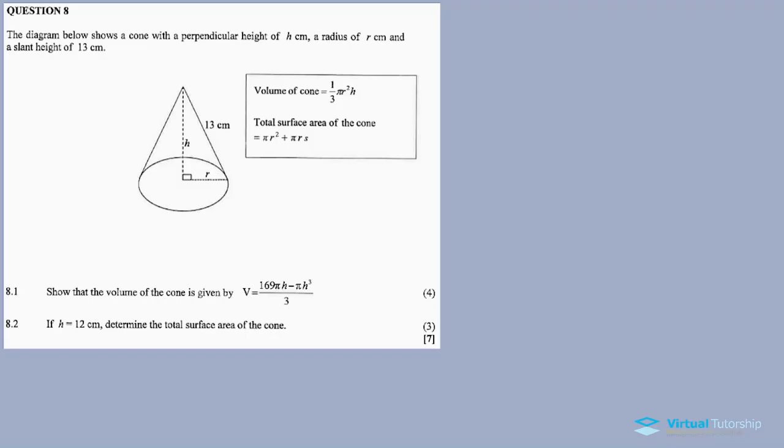In this question, the diagram below shows a cone with a perpendicular height of 8 centimeters, a radius of R centimeters, and a slant height of 13 centimeters. So the H and R are unknown. In this box, volume as well as the total surface area of the cone. So 8.1 show that the volume of the cone is given by this volume, this expression or this equation.